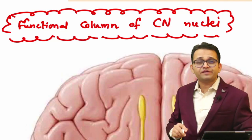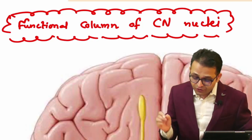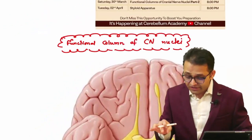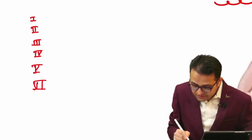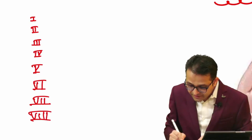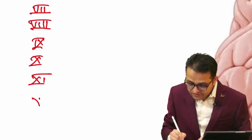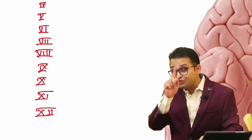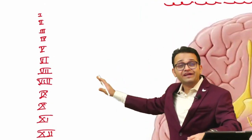This is an important topic because questions are asked directly and indirectly from here. As I taught you earlier, there are 12 cranial nerves - first through twelfth. I also told you about the zero pair, thirteenth pair, and fourteenth pair cranial nerves. But we are going to talk about our ideal cranial nerves.